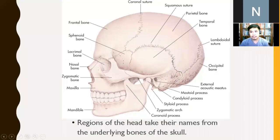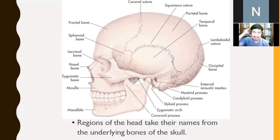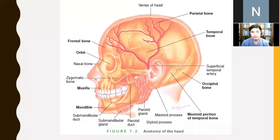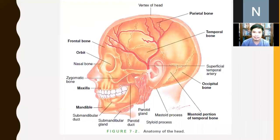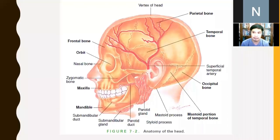Study the different regions of the skull because locations are named according to skull portions: frontal, parietal, temporal, occipital, and the mastoid portion of the temporal bone. When documenting findings, be specific — for example: a two-by-two centimeter, movable, cystic, tender mass located at the mastoid portion of the temporal bone behind the left ear. You need to know the anatomy to be more specific about location.